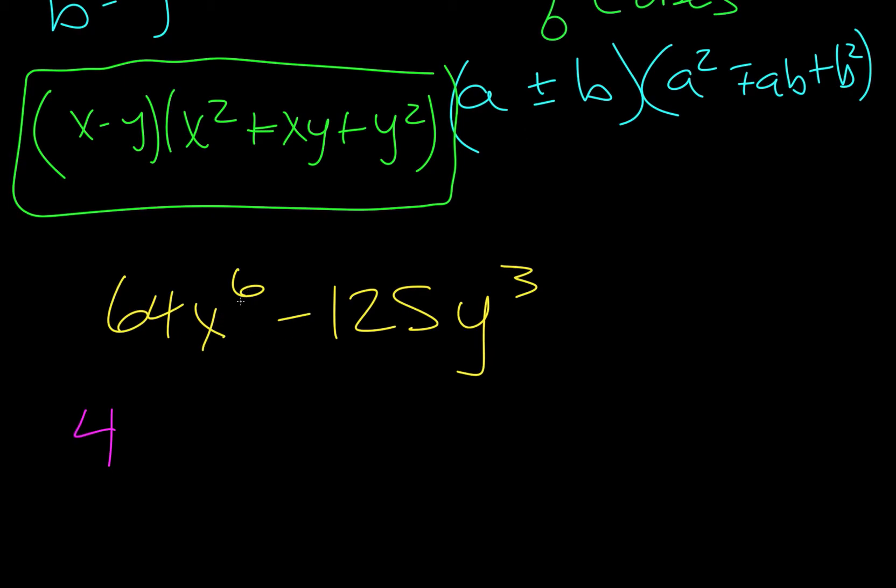We could raise 64 to the 1 third on a calculator, and that would help us determine that as well. Now x squared times x squared times x squared, because we added 2 plus 2 plus 2, would make this 6. And so x squared is a part of our a. Now b is going to be 5y. Because 5 times 5 times 5 is 125, and y times y times y is y cubed.